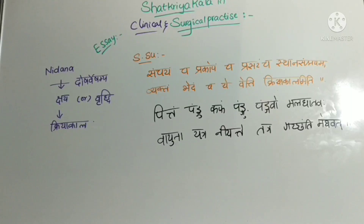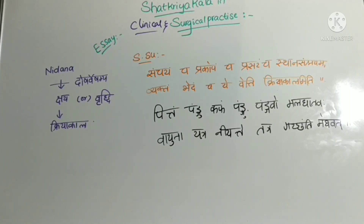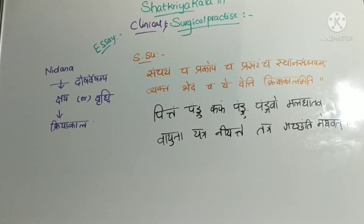Next, Sthana Samshriya. Dosha-Dushya Sammurchana will be noticed in Sthana Samshriya. This means the doshas move from their actual site and settle in other places, manifesting that particular disease at a site other than its normal location. In Vyaktavastha, actual manifestation of the disease will be seen — diseases like Shofa, Atisara, Vidradi, Visarpa etc. will be present in that particular patient. Naming of the disease will be seen appropriately in this Vyaktavastha.